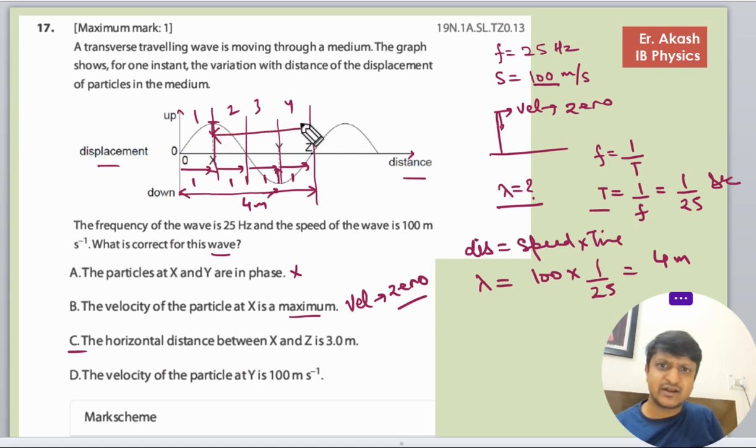So the distance now we need from X to Z. From X to Z it is 1, 2, 3, that is 3 meters. So the horizontal distance between X and Z is 3 meters. Yes, definitely we have calculated it.